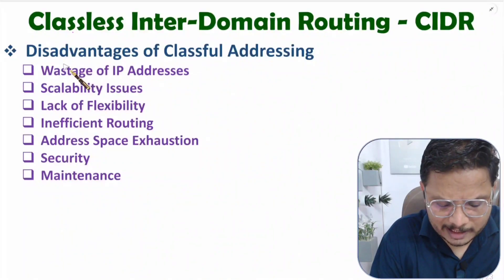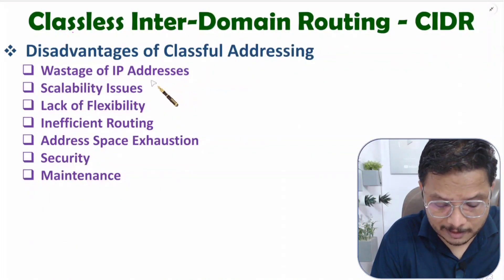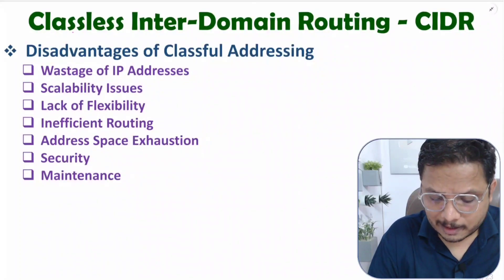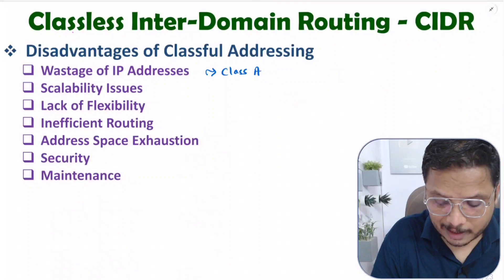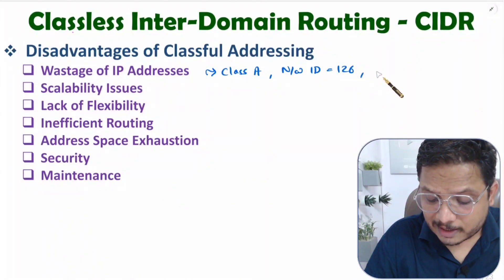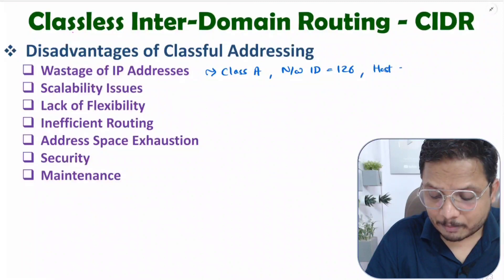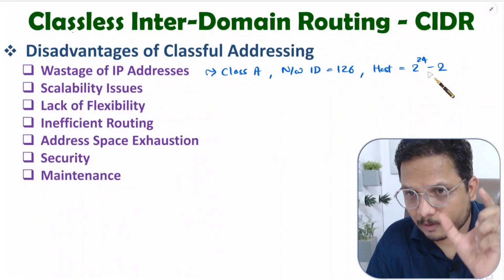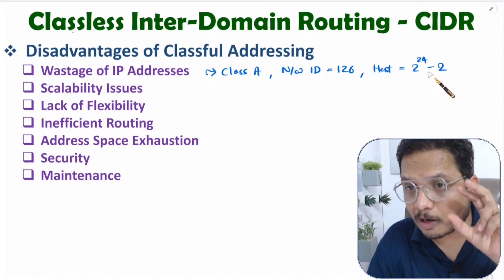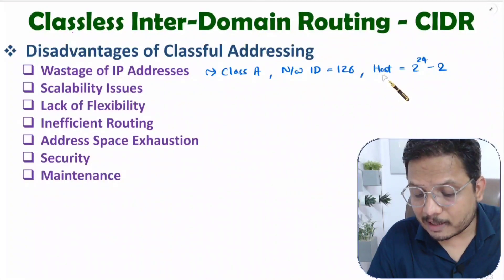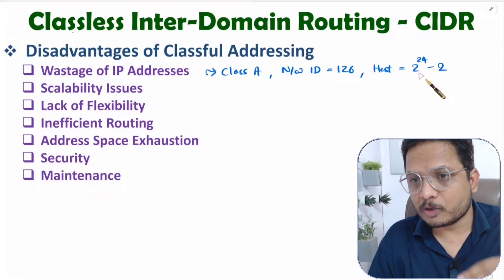With classful addressing, disadvantages include wasting IP addresses, scalability issues, and lack of flexibility. With Class A, there are 126 network IDs available. With each network ID, the number of hosts possible is 2 to the power 24 minus 2. We subtract 2 because one IP represents the network and a second IP is for broadcasting inside the network.